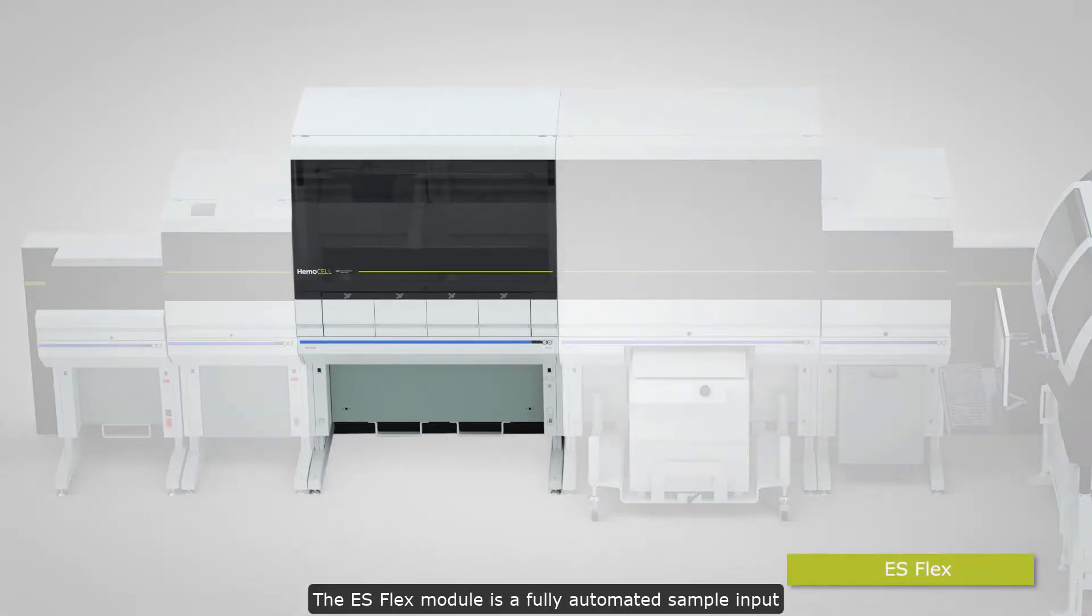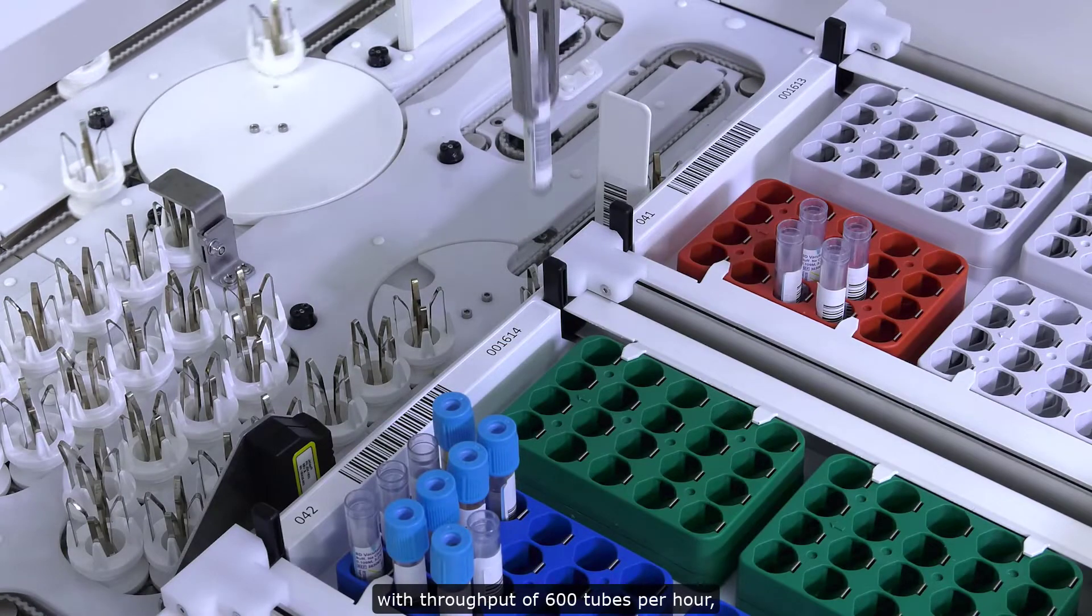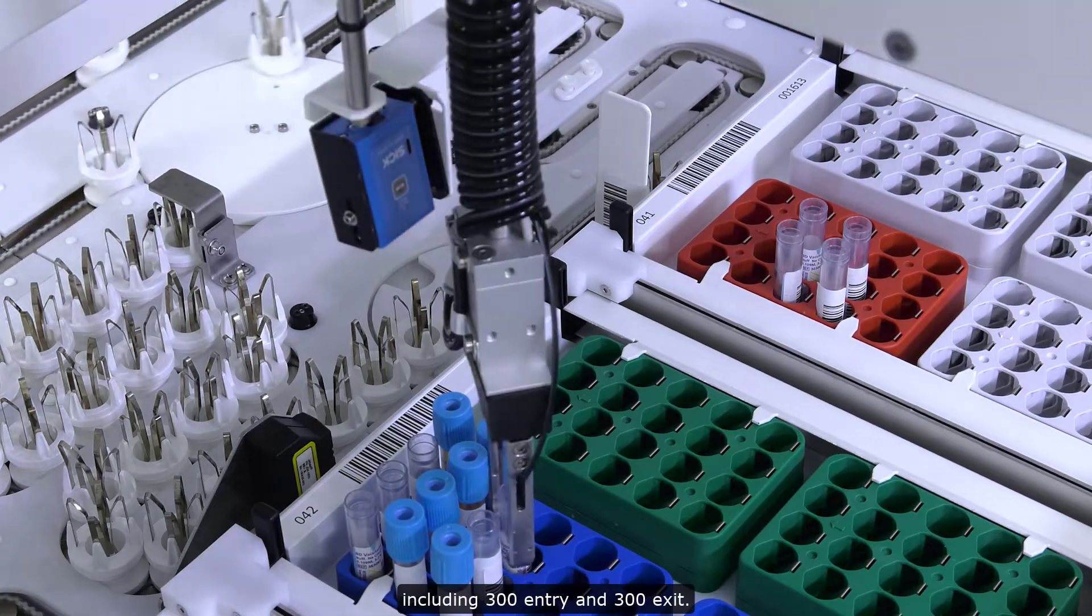The ESFlex module is a fully automated sample input and sorter module with throughput of 600 tubes per hour, including 300 entry and 300 exit.